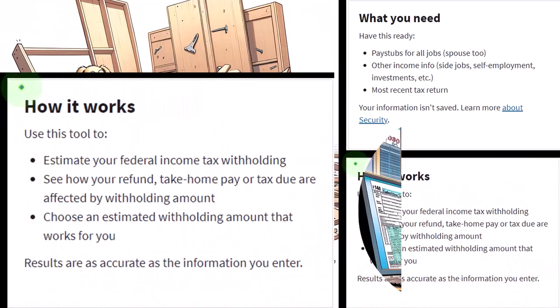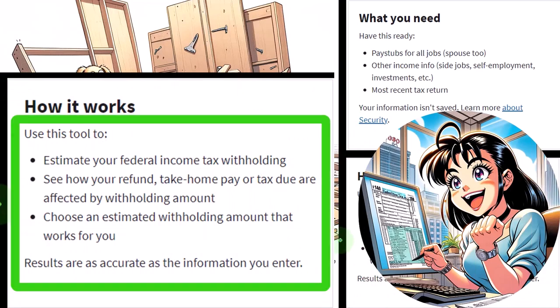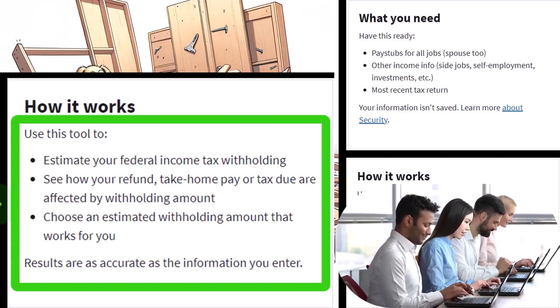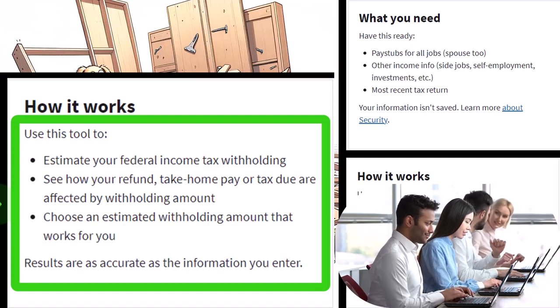So how it works: use this tool to estimate your federal income tax withholding. See how your refund, take-home pay, or tax due are affected by the withholding amount. Choose an estimated withholding amount that works for you. If you need to withhold more to pay the appropriate amount of tax and avoid penalties and interest for paying too little, that means the checks you receive will be lower because your employer will take the money before you receive it in your paycheck.